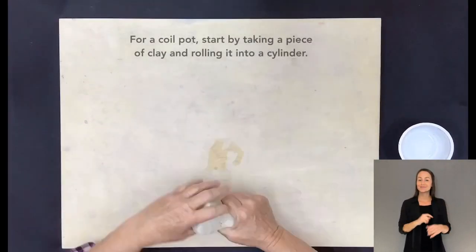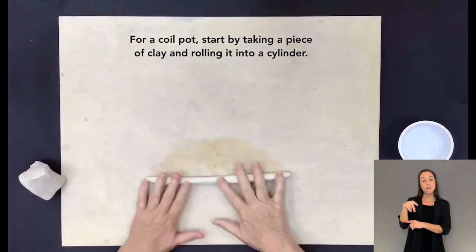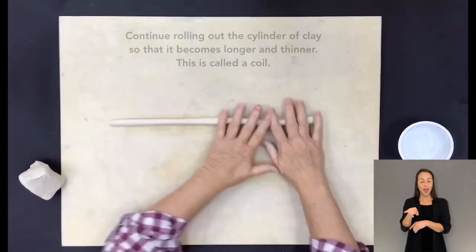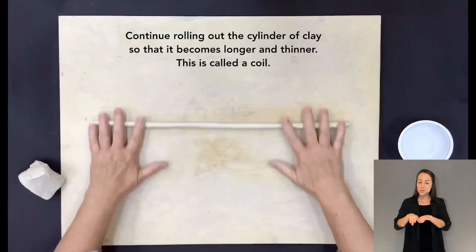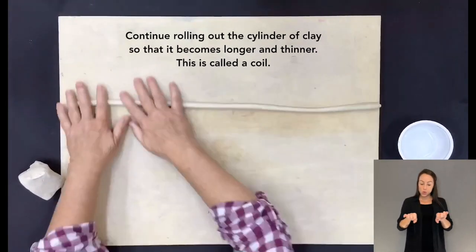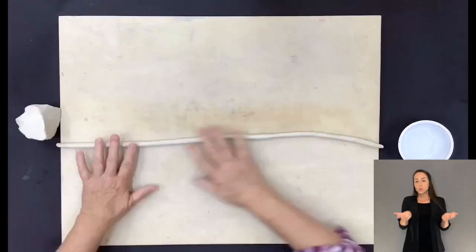For a coil pot, start by taking a piece of clay and rolling it into a cylinder. Continue rolling out the cylinder of clay so that it becomes longer and thinner. This is called a coil.